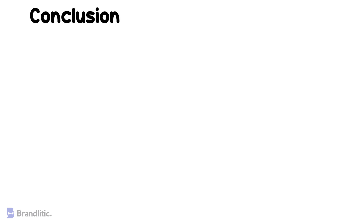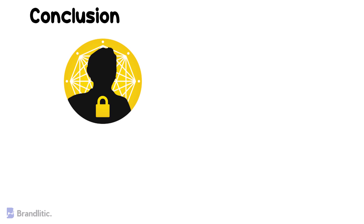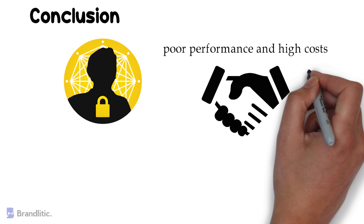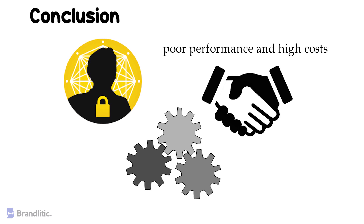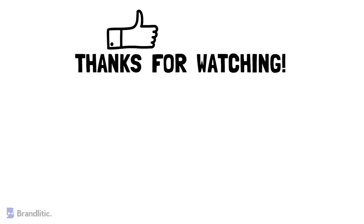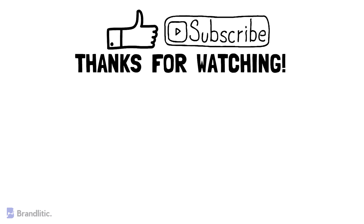As a conclusion, it's worth noting that while homomorphic encryption looks like a dream when it comes to data privacy and protection, its poor performance and high cost still keep it out of commercial and production applications as of now. But there have been major improvements in terms of speed lately, and knowing the current pace, I believe we would be able to see at least small commercial integrations in the next few years. I hope this video was helpful. Feel free to smash that like button and subscribe to the channel, as it keeps me motivated to create more content like this for you.